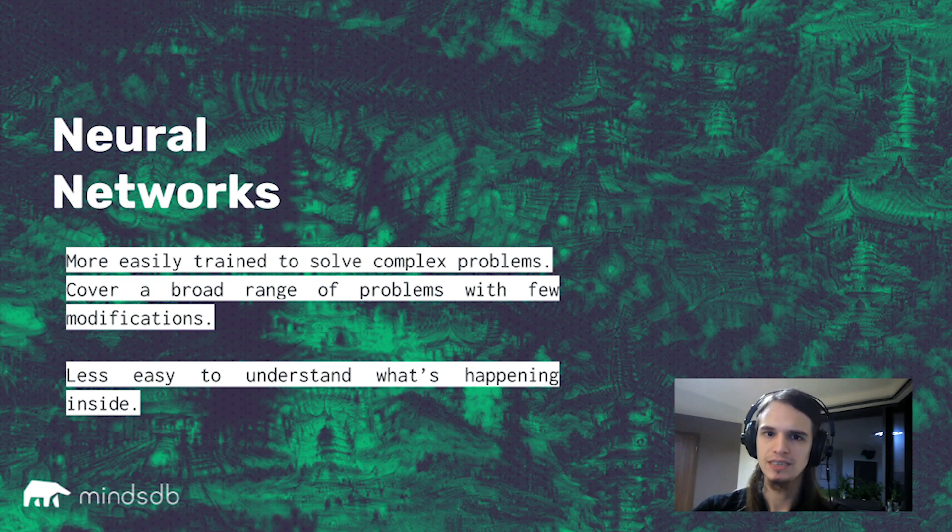But with a neural network, it's very hard to actually understand what's happening inside of it. So we had our simple decision tree there, and it's super easy to just go up that tree and figure out why a decision was taken.